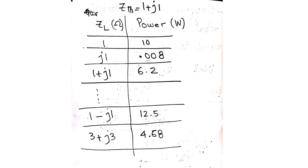What we have done is set Z_thevenin constant at 1 + j1 Ohms — this is the internal impedance of the circuit, not resistance. We then try different values of ZL and observe the power P dissipated in the load.